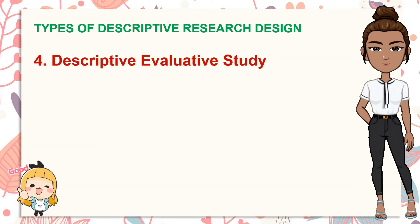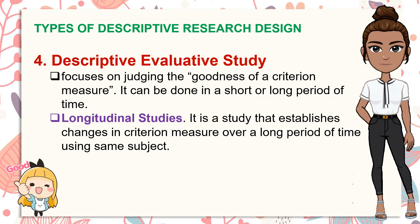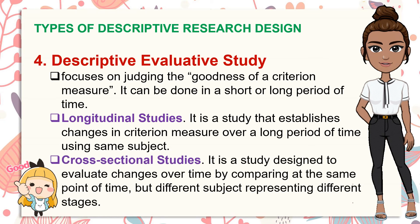The fourth type is the descriptive evaluative study. This study focuses on judging the goodness of a criterion measure and can be done over a short or long period of time. Longitudinal studies establish changes in a criterion measure over a long period of time using the same subjects — for example, studying changes in IQ of 9 to 11 year old kids over a 3-year period, testing the same group throughout. Cross-sectional studies evaluate changes over time by comparing different subjects representing different stages at the same point in time — for example, testing children's IQ simultaneously from respondents aged 9, 10, and 11 years old.